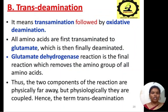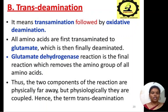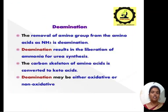Next is transdeamination, which means transamination followed by oxidative deamination. All amino acids are first transaminated to glutamate, which is finally deaminated. The glutamate dehydrogenase reaction is the final reaction which removes the amino group of the amino acids. Thus, the two components of the reactions are physically far apart but physiologically coupled. Hence the term transdeamination.